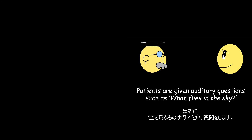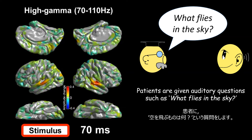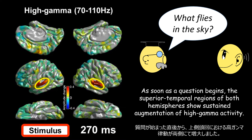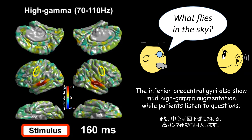Patients are given auditory questions such as 'What flies in the sky?' As soon as a question begins, the superior temporal regions of both hemispheres show sustaining augmentation of high gamma activity. The inferior precentral gyri also show mild high gamma augmentation while patients listen to questions.